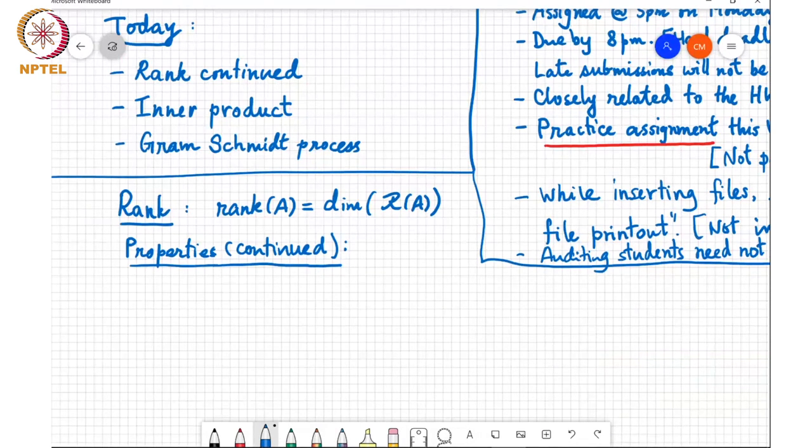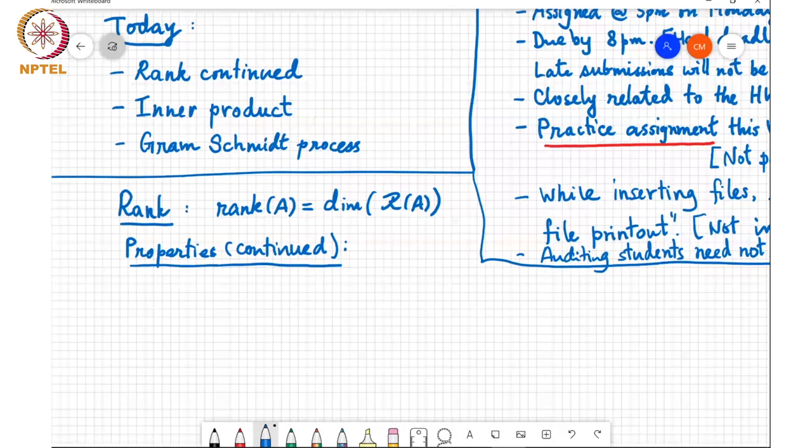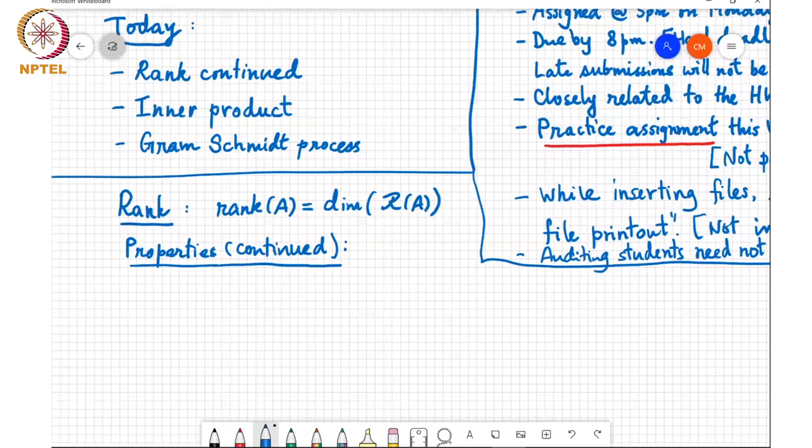The basic definition is that the rank of a matrix A is the dimension of the range space of A, and the dimension itself is the number of vectors in a basis for a vector space. The range space of A is the span of the columns of A, and the dimension of that vector space is the rank of a matrix. So the last time we saw that rank equals the number of linearly independent columns in A, and there is a remarkable fact which is that the rank of A equals the rank of A transpose - row rank equals column rank.